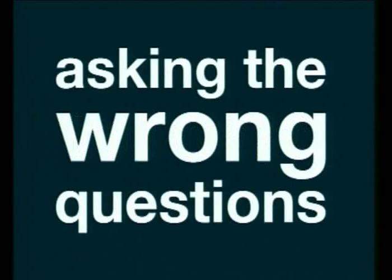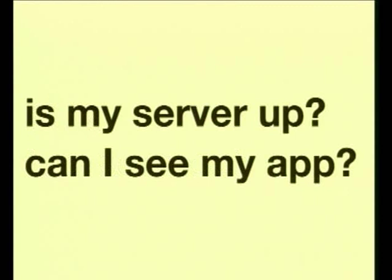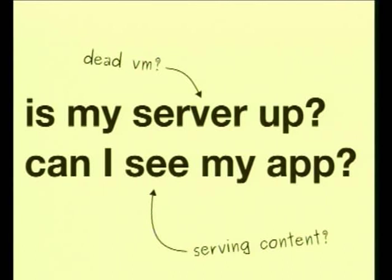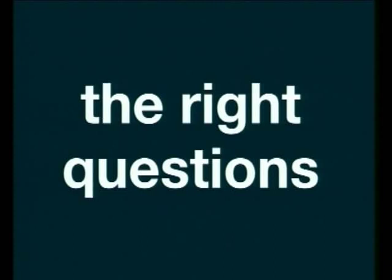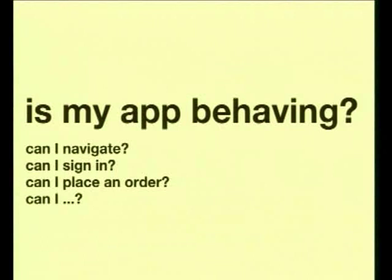The question really comes down to: why would you want to do stuff like this? The problem with existing monitoring solutions is that they're essentially asking the wrong questions. The sort of checks most people are doing — a ping check or a TCP connect to a port — is basically asking, is my server up and can I see my application? The problem is it doesn't deal with corner cases like VMs being dead but the network still being up so they still respond to pings. Or a web application where half the page loads but not the other half, and what you're checking is only in the top half. Your monitoring system is giving you false positives about the behaviour of your infrastructure. Using Cucumber Nagios helps you write tests that ask the right questions: is my app behaving? Can I go through a billing and checkout process? Can I place an order? Can I sign in?